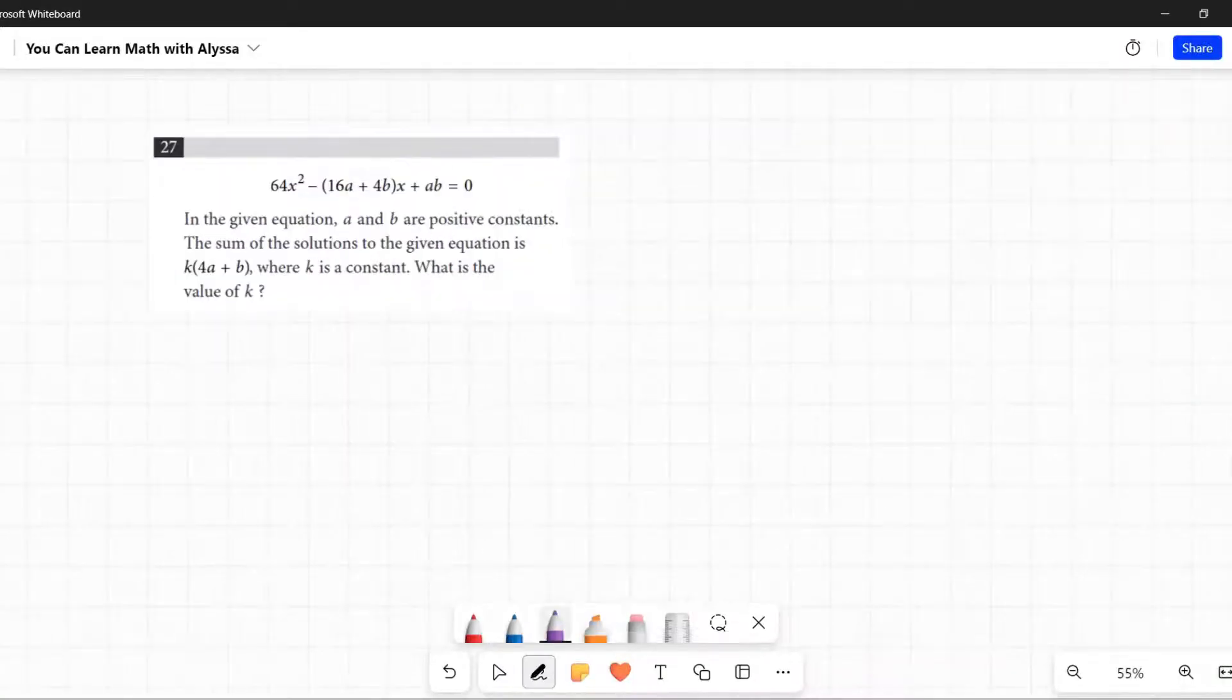Okay, problem 27. Guessing a lot of you jumped straight here. This one is a doozy. It is what I call a eureka problem. It's not a problem you're going to find in your math book. It's one you just kind of have to have a eureka moment and figure out what they're wanting you to do.